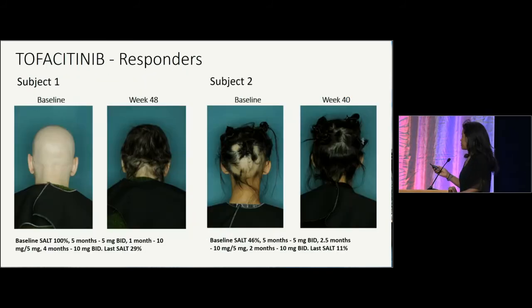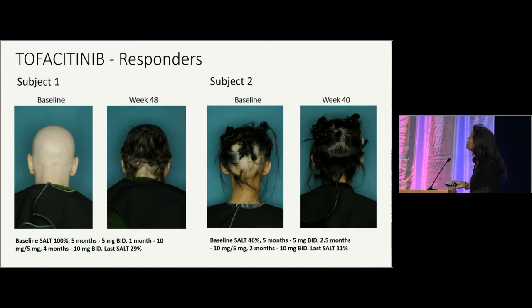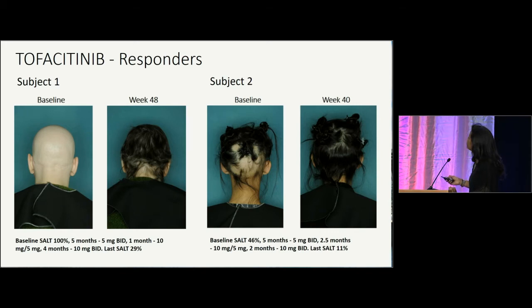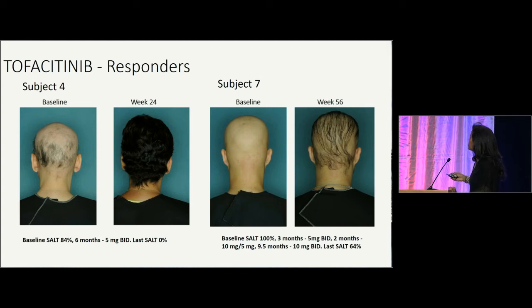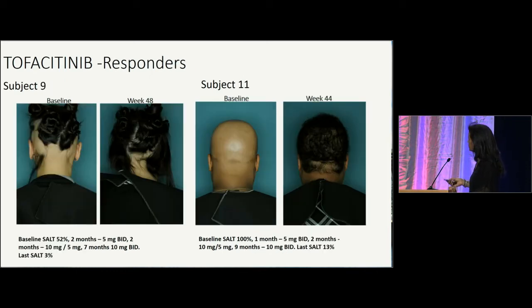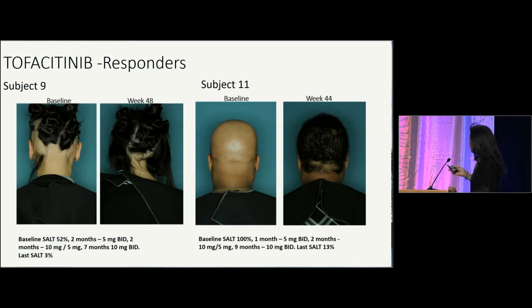Showing a subset of our responders: one patient had alopecia totalis at baseline with excellent regrowth at week 48. A patient with moderate patchy hair loss at baseline had excellent regrowth at week 40. A patient with severe patchy hair loss responded to the lower dose of 5 milligrams twice a day with full regrowth at week 24. A totalis patient had good but not full regrowth at week 56. Another patient had moderate patchy hair loss with excellent but not complete regrowth at week 48, and a totalis patient had excellent regrowth at week 44.